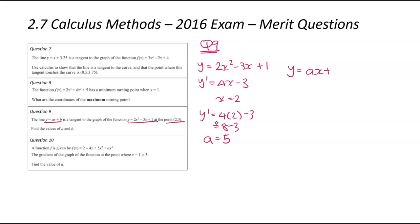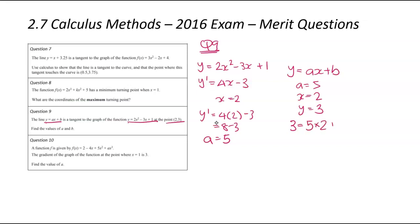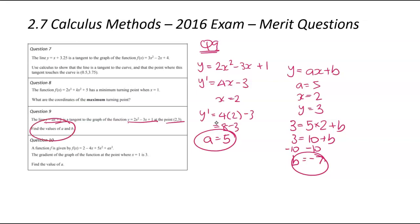Once we know a equals 5, we write our tangent function y equals ax plus b. We know a equals 5, x equals 2, and y equals 3 from the coordinate. Substituting: 3 equals 5 times 2 plus b, so 3 equals 10 plus b. Going minus 10 on both sides gives b equals minus 7. Just like that, we've found a equals 5 and b equals negative 7. We weren't asked to write the full tangent equation, just to find the a and b values.